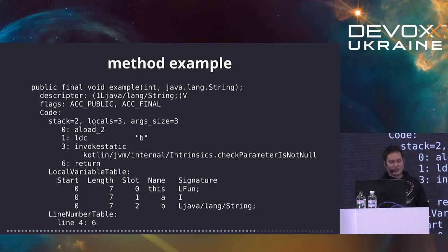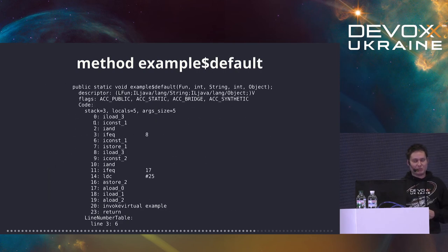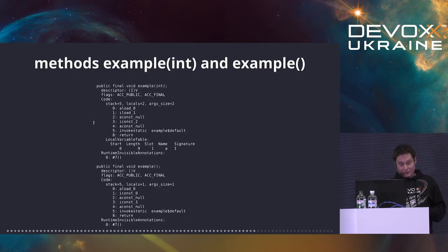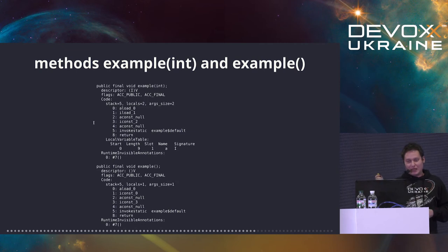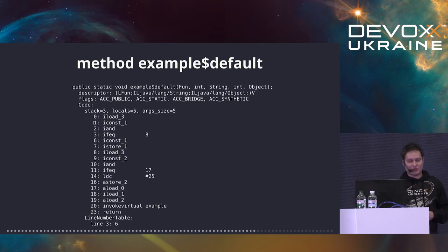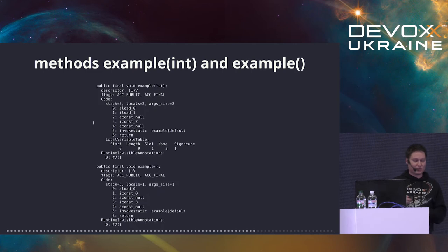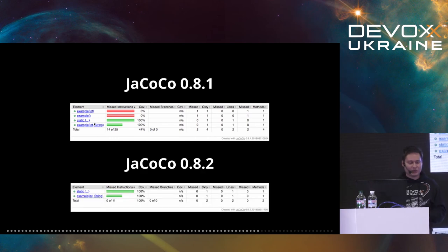The method 'example$default' does just substitution — it knows the default arguments, how many arguments are being passed, and substitutes defaults. Those two reduced-argument methods simply delegate to the generated one. Again, there are false insulators here — we need to filter all this out, and that's what we do.